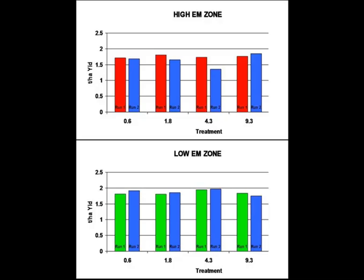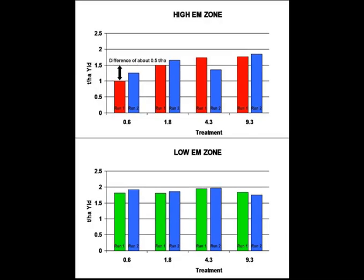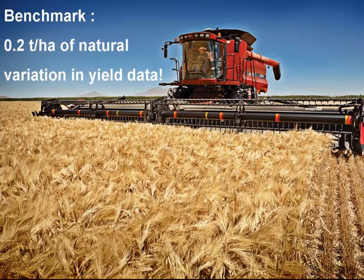If there was a zone or zone-by-treatment effect, we might expect to see a slightly different graph such as this. In this example, the 0.6 tonnes per hectare in the high EM zone is around 500 kg or half a tonne per hectare less than the average of the other treatments. This would indicate that in the high EM there was a distinct response to the application of gypsum, but not so in the low EM. Keep in mind your initial run line variation — if your yield levels in different treatments or zones by treatments are not greater than this, more than likely your treatments have had no significant effect on yield.